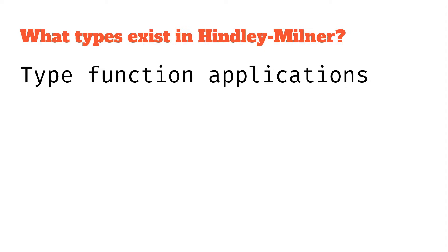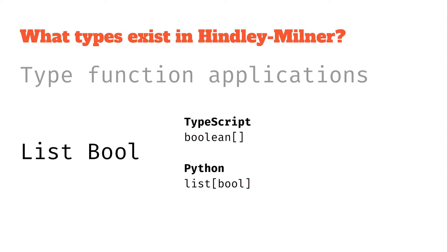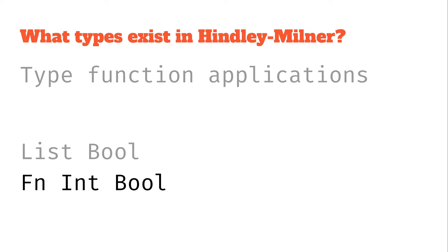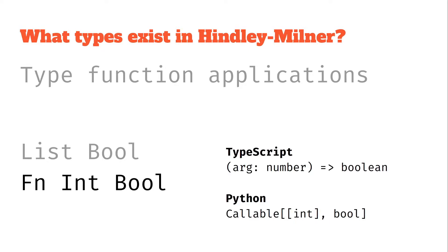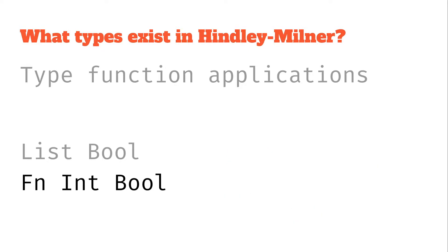We've also got type function applications. For example, we might have a list of booleans — in other languages it might be written with square brackets after it in TypeScript, or as a list of bools in Python. We might have a function from integer to bool, which looks similar to our odd function from earlier. We use an arrow syntax between them for readability, and that means the same thing.